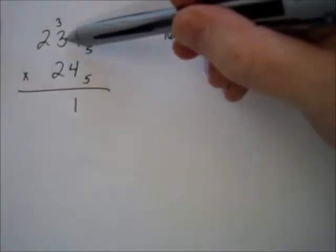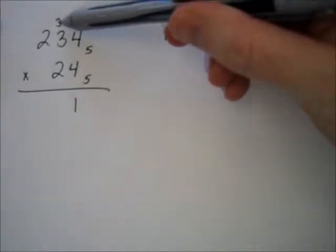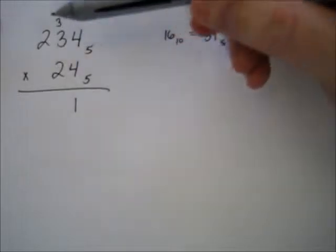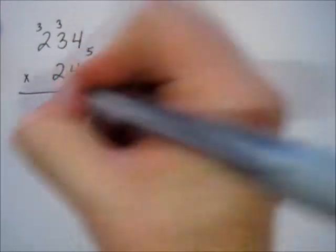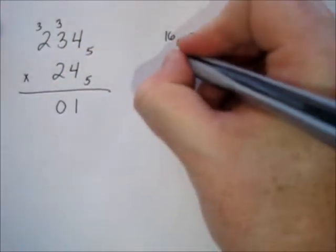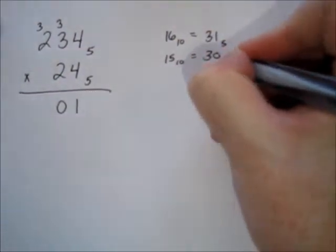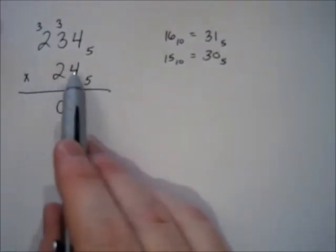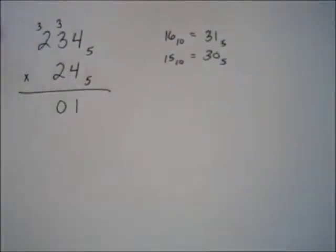Keep going: four times three is twelve, plus three you just carried makes fifteen. Fifteen is how many fives? It's three fives and none left over. So fifteen base ten would be three-zero base five. Four times two is eight, plus the three we carried is eleven.